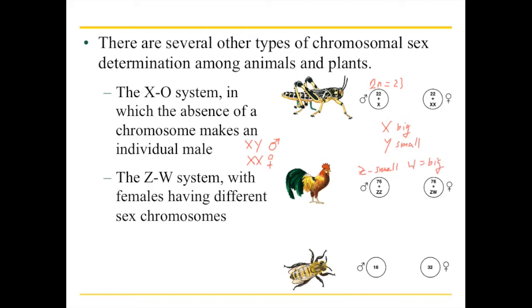During my postdoc, I found the frog that has the largest W chromosome in the world — it is seven times as large as the Z chromosome. It's kind of interesting, but if you think about chromosome numbers and whether size matters, not really. It's just a frog that got a big chromosome.